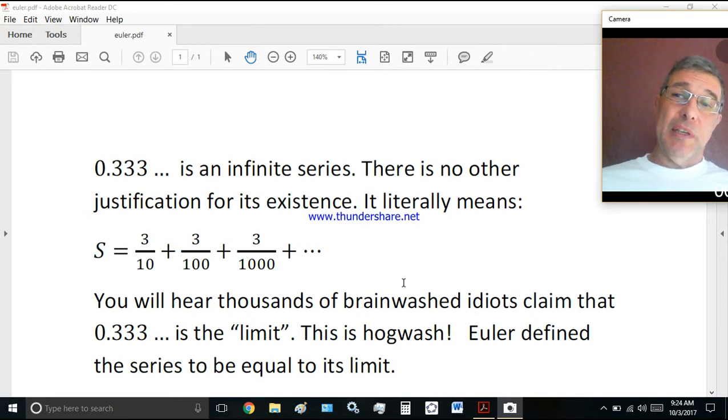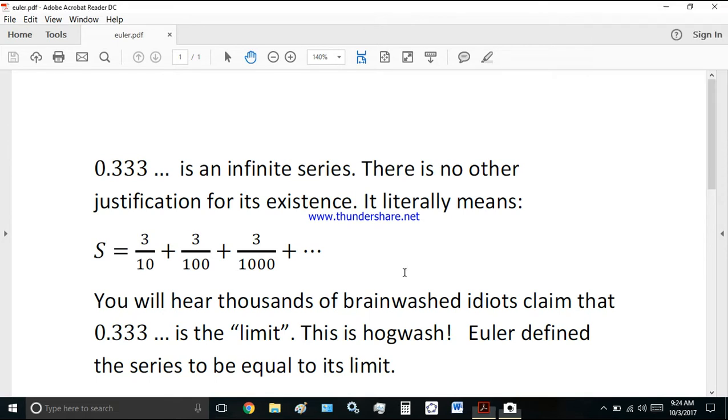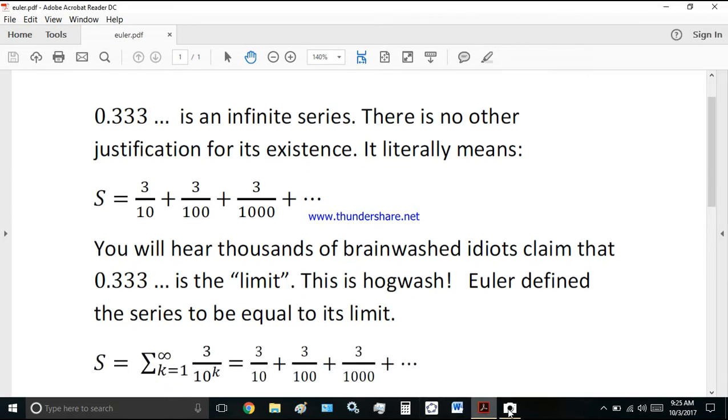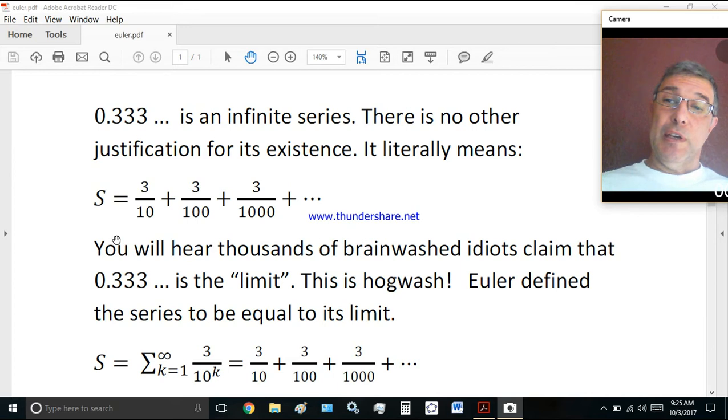0.333, with an ellipsis following it, is an infinite series. There is no other justification for its existence. It literally means the sum of all those terms. If we take a look at the series here, which you see on the left, it's equal to 3 tenths plus 3 hundredths plus 3 thousandths.